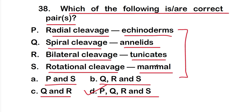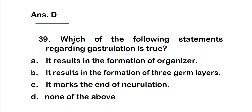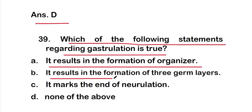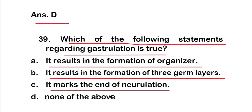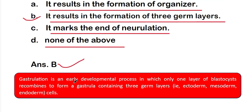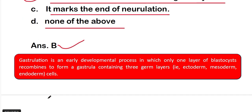Question 39: which of the following statements regarding gastrulation is true? Option A: it results in the formation of an organizer; option B: it results in the formation of three germ layers; option C: it marks the end of neurulation; option D: none of the above. The right answer is option B — gastrulation results in the formation of three germ layers: ectoderm, mesoderm, and endoderm.